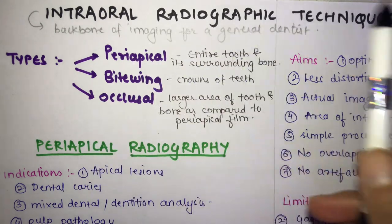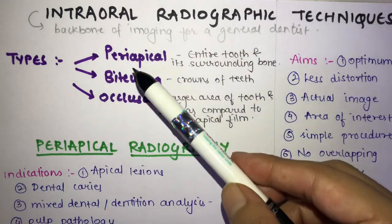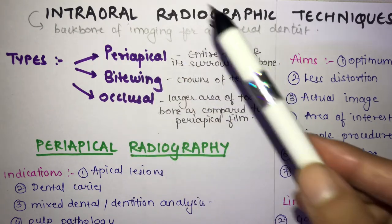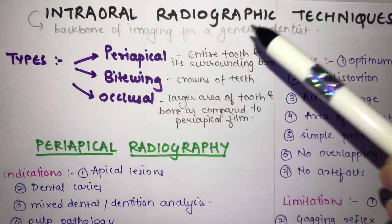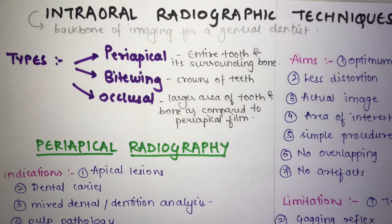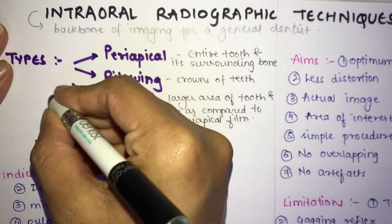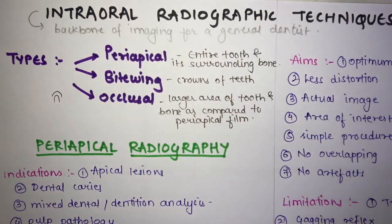There are three types of intraoral radiographic techniques: periapical, bitewing, and occlusal. Periapical radiography shows the entire tooth and its surrounding bone. The purpose is to examine the entire tooth — as the name suggests, it focuses around the apex, showing the terminal end of the root and the surrounding bone.